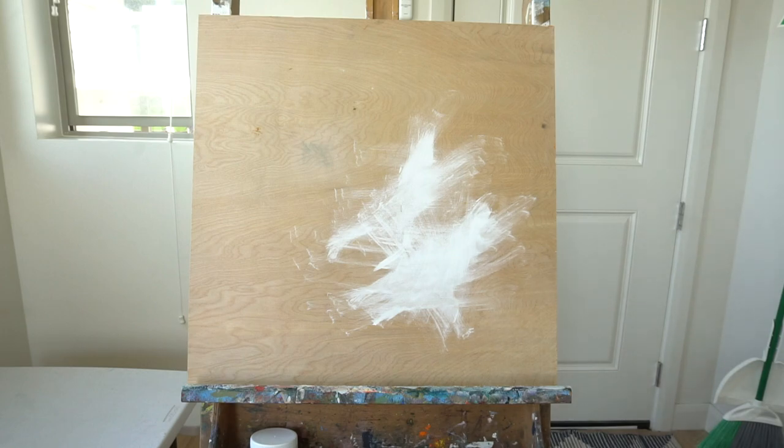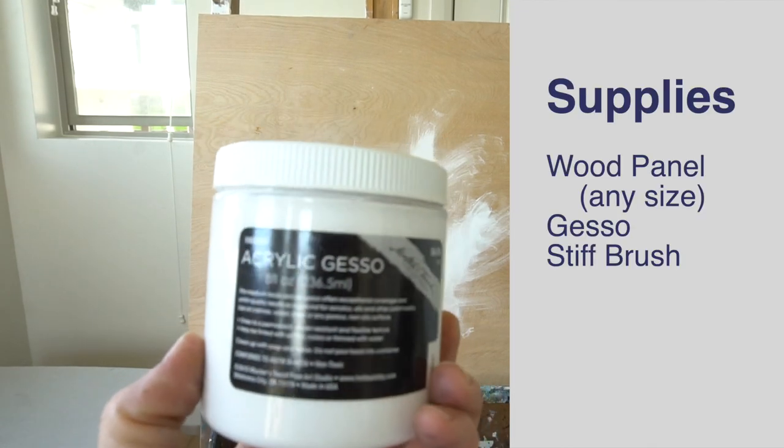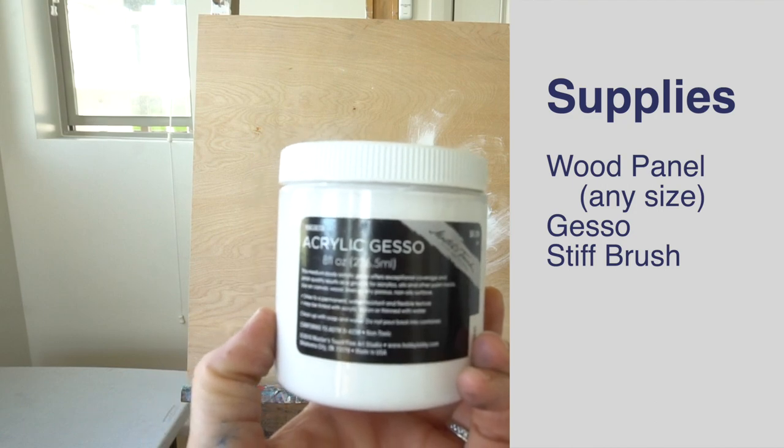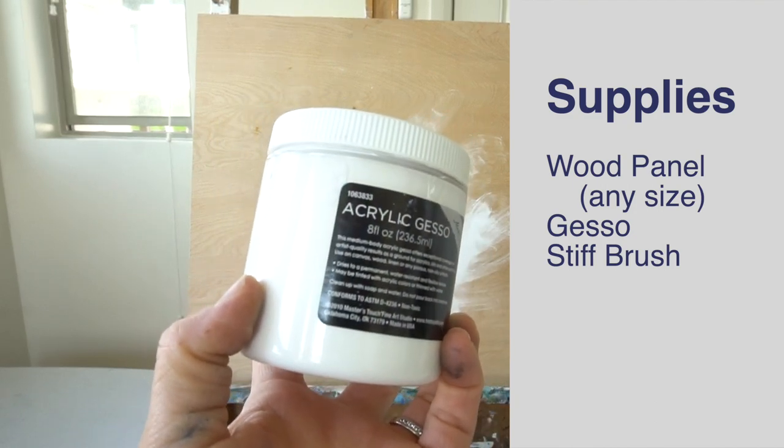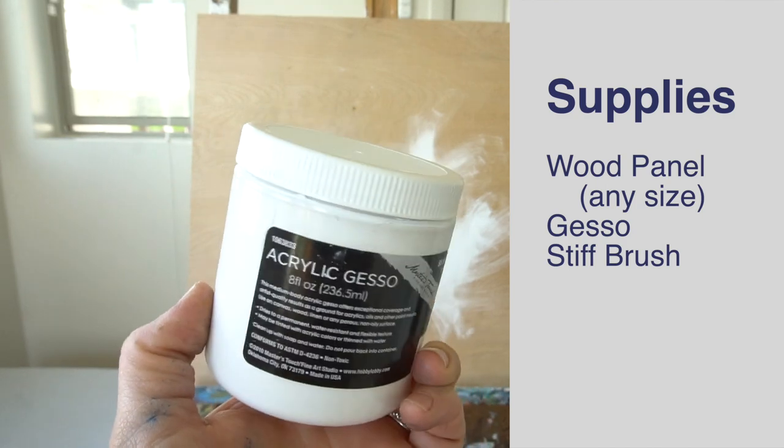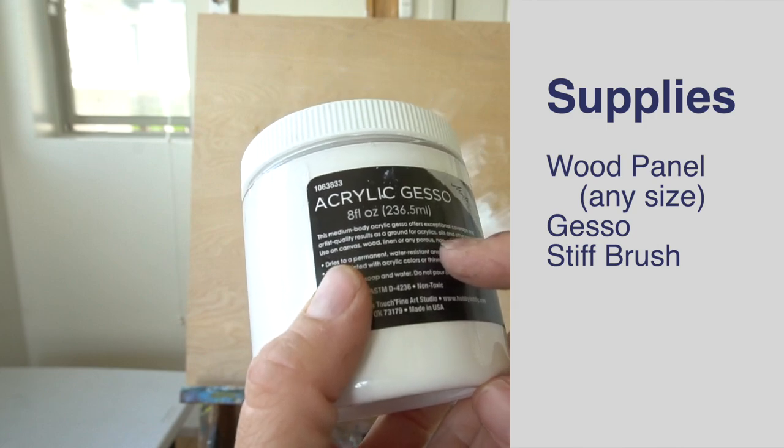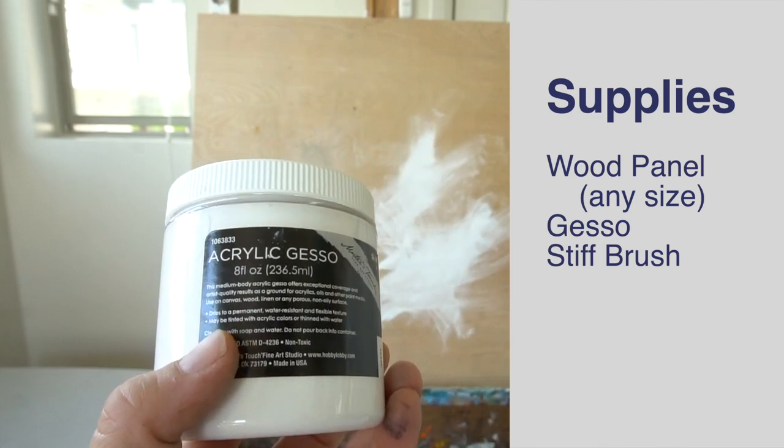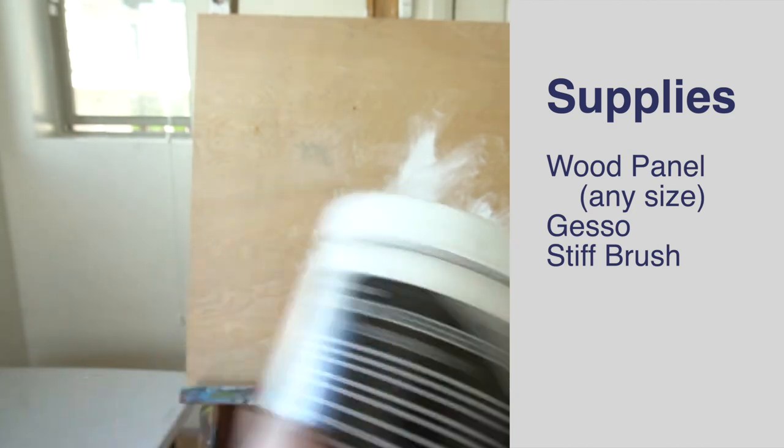All you need is your wood panel and some gesso. This is the only brand they had at my craft supply store. Usually I would get something bigger than this small container, but this works. You can use this under acrylic, under oil, and other paint mediums. You can put it on canvas, wood, linen, any porous non-oily surface. So let's do it.